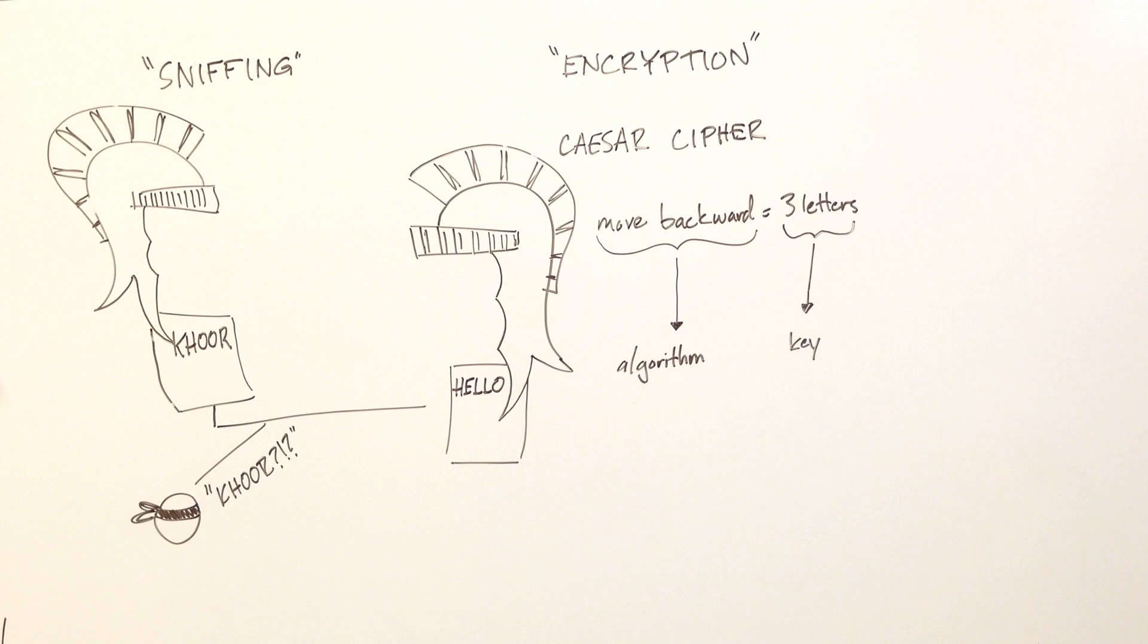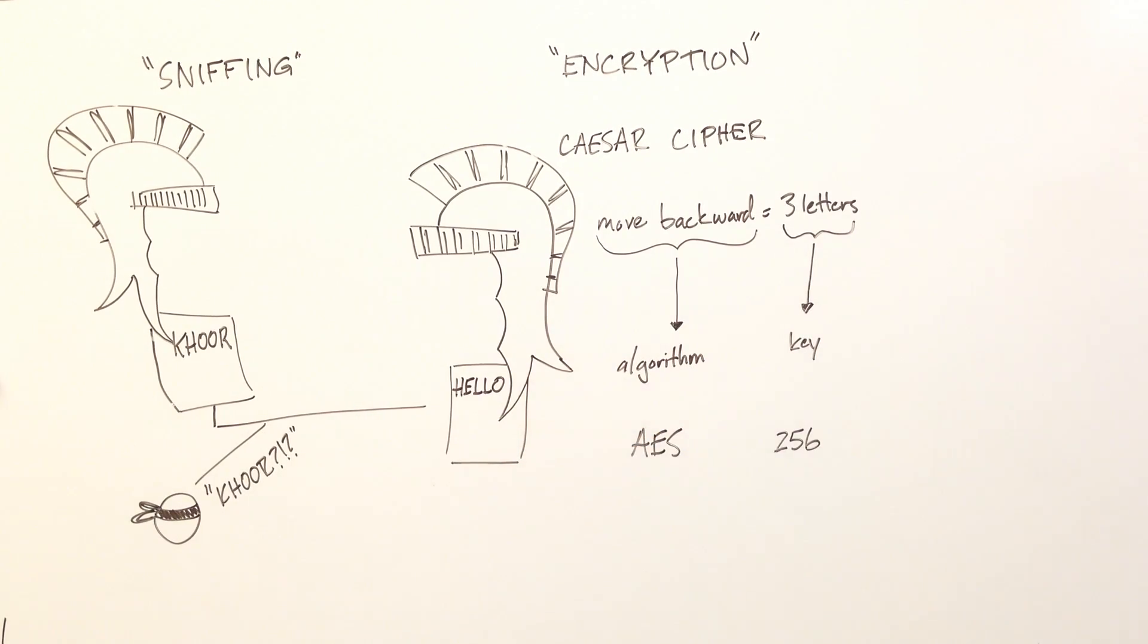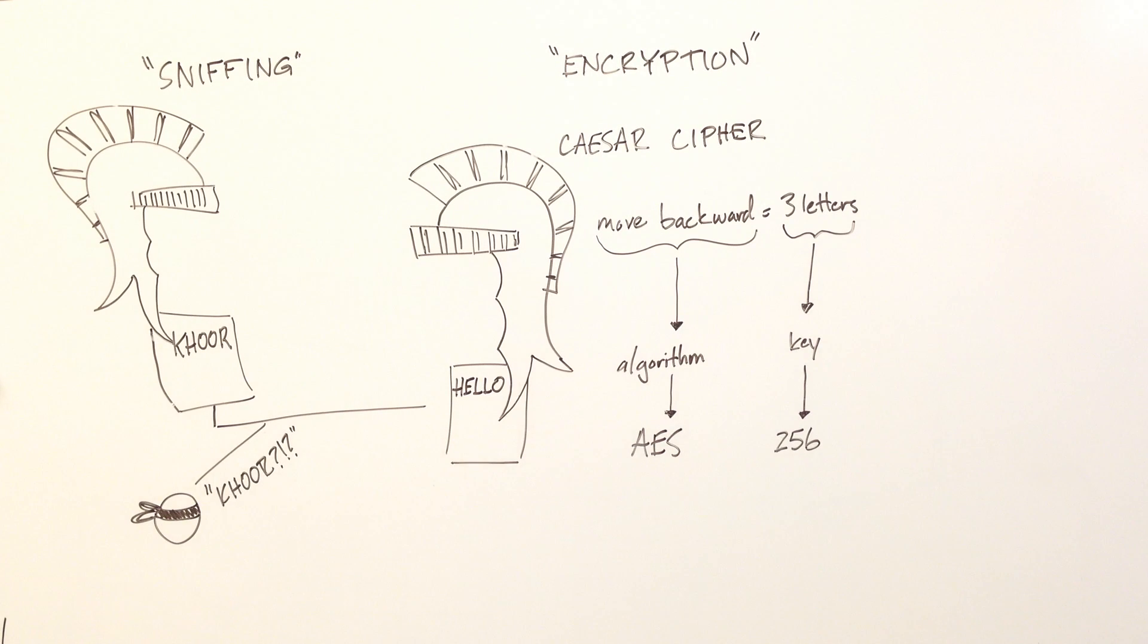Modern encryption techniques such as AES-256 also use an algorithm and a key, just like the Caesar Cipher. AES stands for Advanced Encryption Standard, and 256 describes the key.